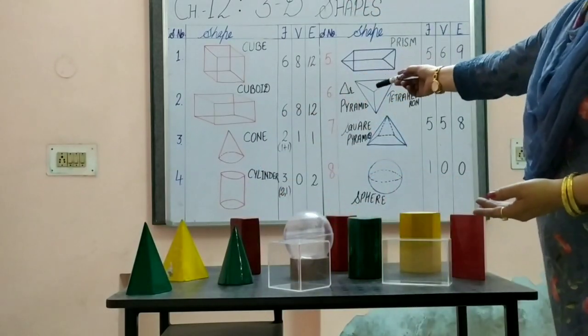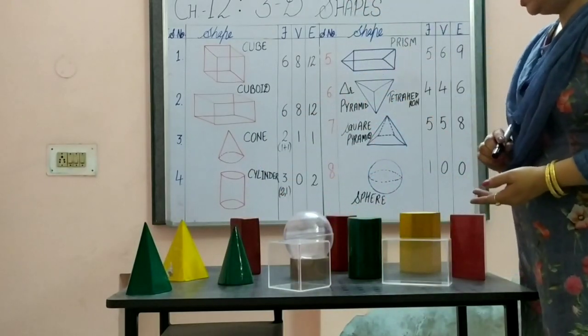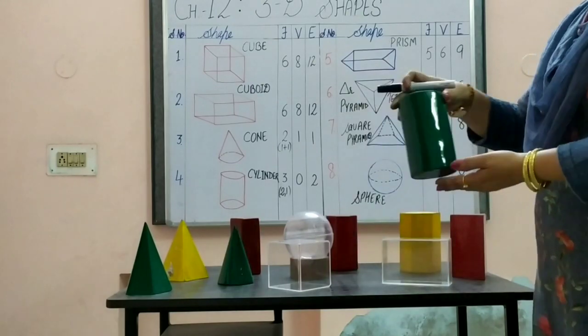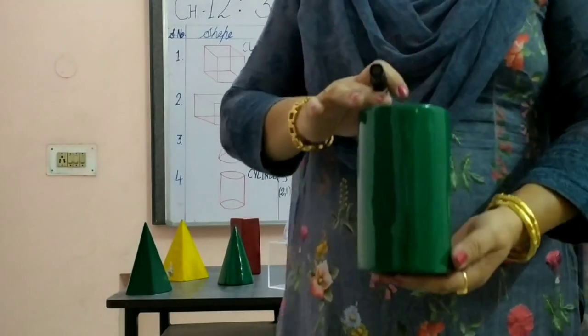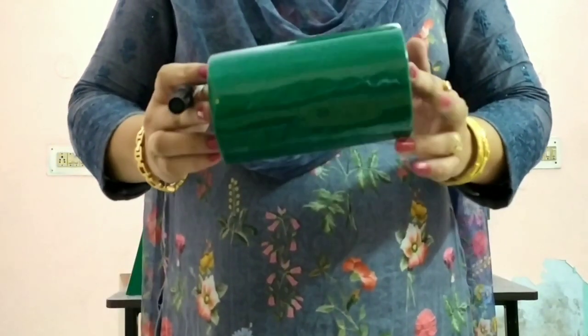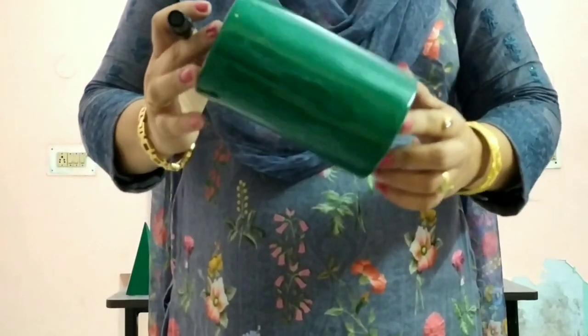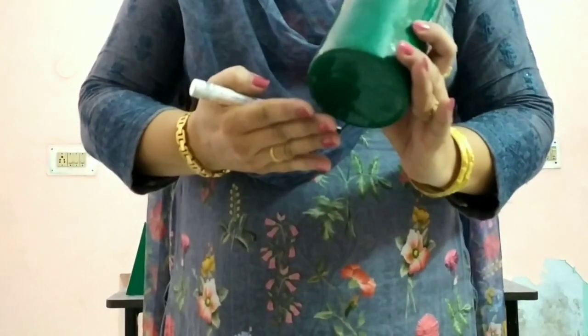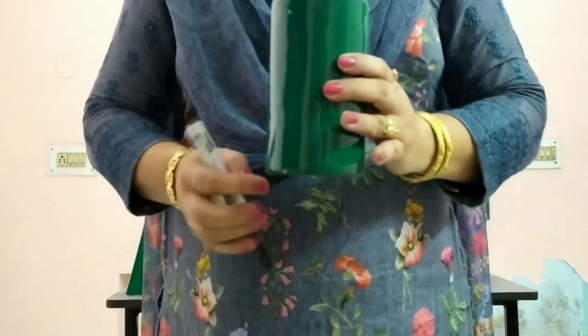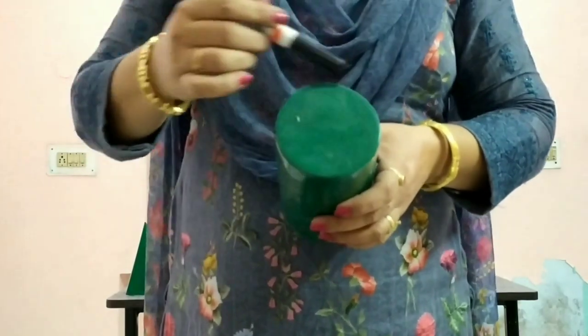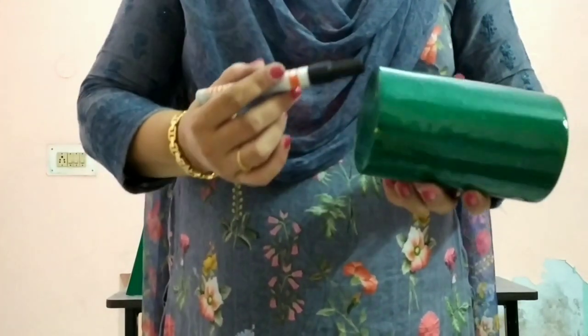Coming to the cylinder. This is the cylinder — just like a road roller, it is round all over. It has two flat faces — top and bottom — and one lateral curved surface, so there are total three faces: two flat and one curved. And how many edges? It has two curved edges.